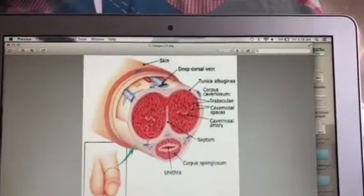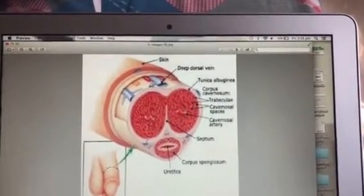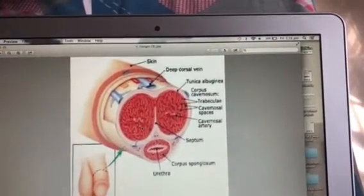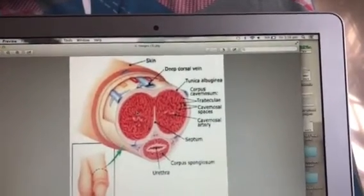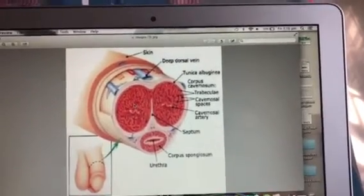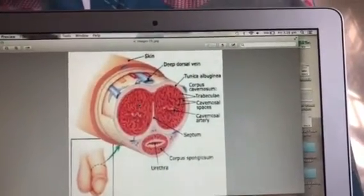These two tubes are called the corpora cavernosa and this hollow tube is called the corpus spongiosum. Now these two tubes the corpora cavernosa are interlinked at the glans of the head of the penis and are just blood-filled spaces.